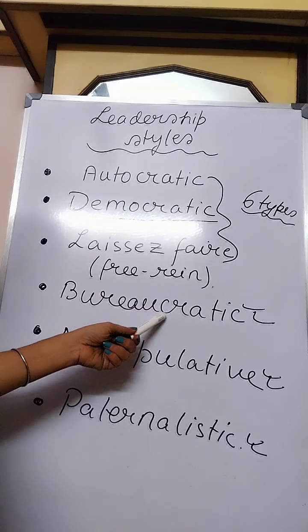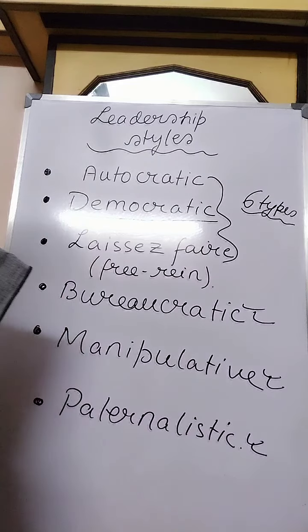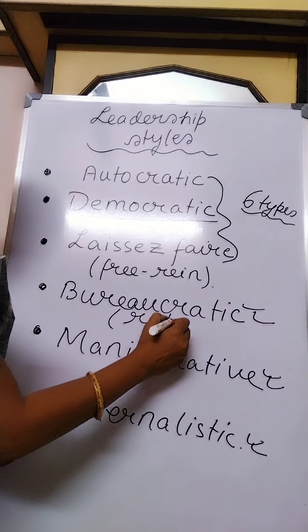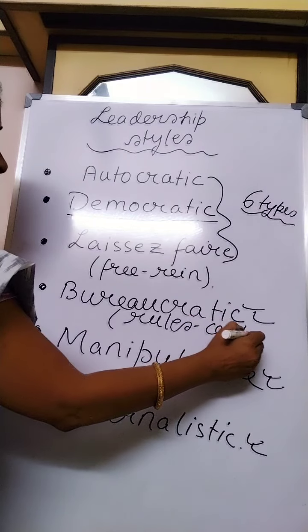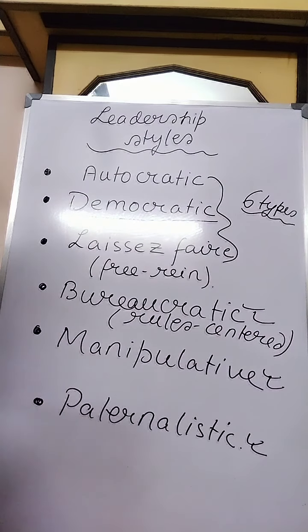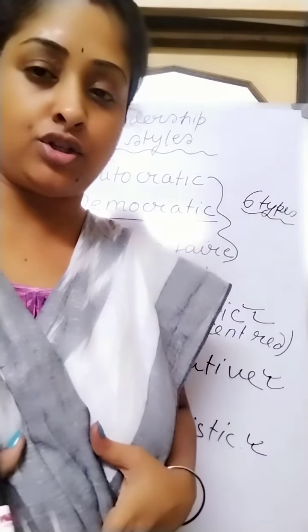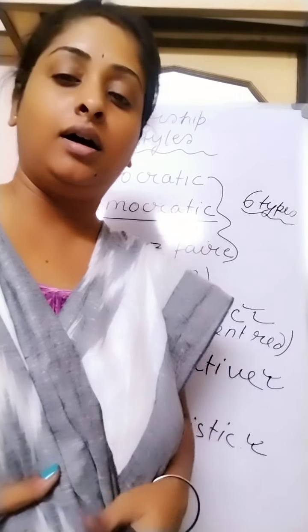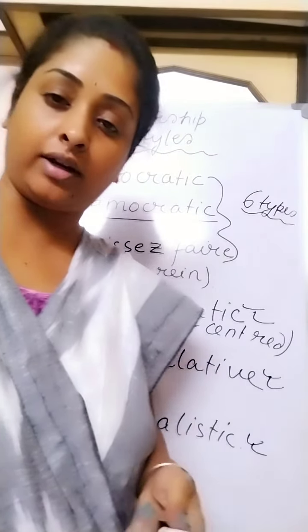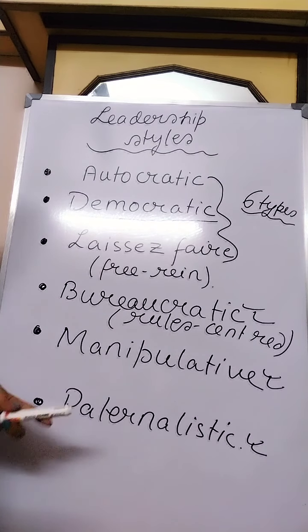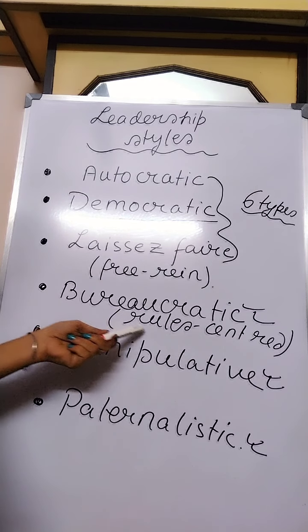The first topic today is the fourth type of leadership: Bureaucratic Leadership, also called rules-centered leadership style. This is a style where a leader's behavior is influenced by a high degree of reliance on rules, restrictions, and regulations. This leadership style is totally based upon rules, regulations, and procedures to be followed in an organization — a rules-oriented, rules-restricted style.